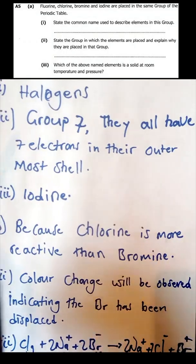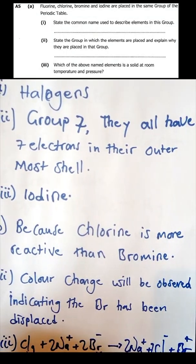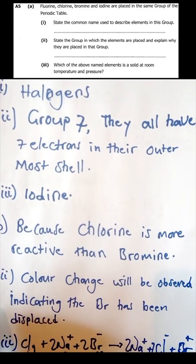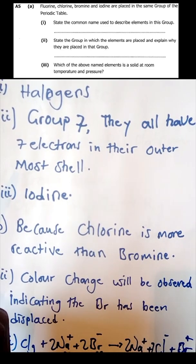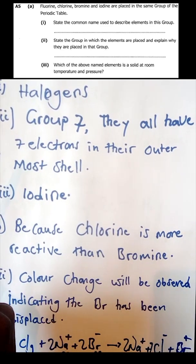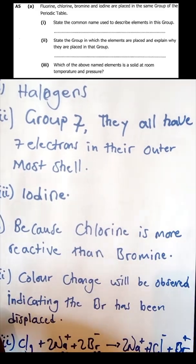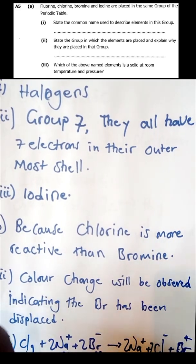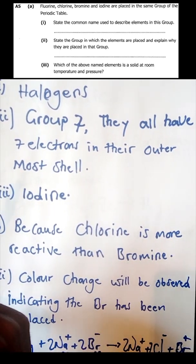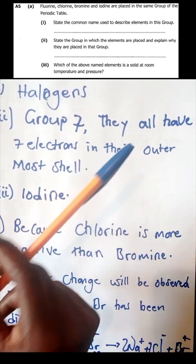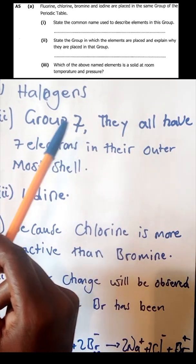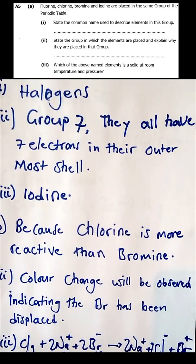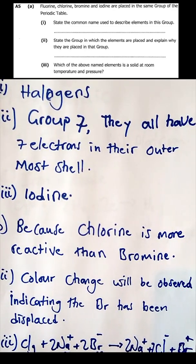State the group in which the elements are placed and explain why they are placed in that group. They are placed in group seven. Groups of the periodic table contain elements with the same number of electrons in their outermost shell. Elements in group one have one electron in their outermost shell, group two have two electrons, and so on. These elements are placed in group seven because they all have seven electrons in their outermost shell.